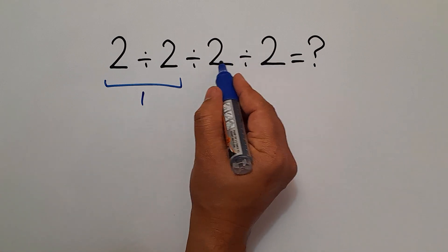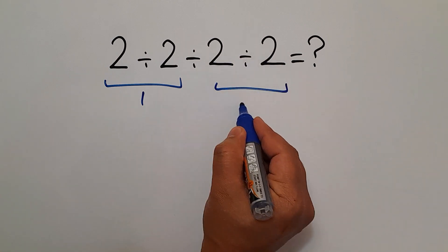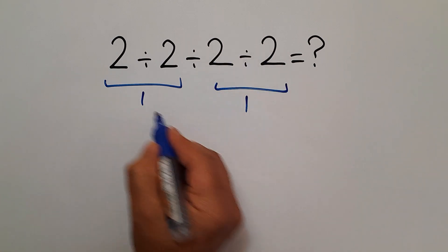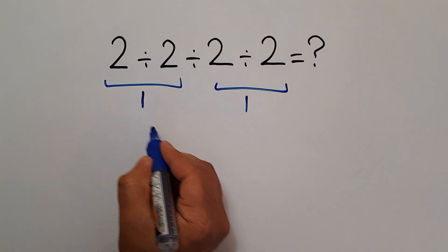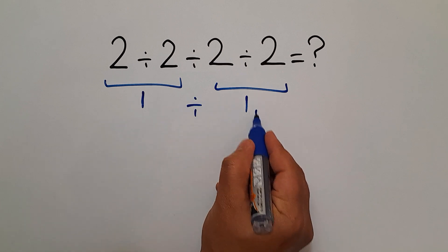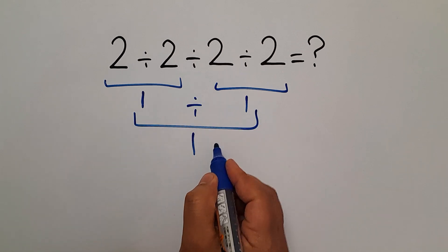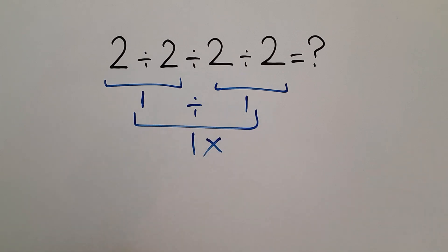We have here 2 divided by 2, which equals 1. So, 1 divided by 1 gives us 1. But this answer is not correct.